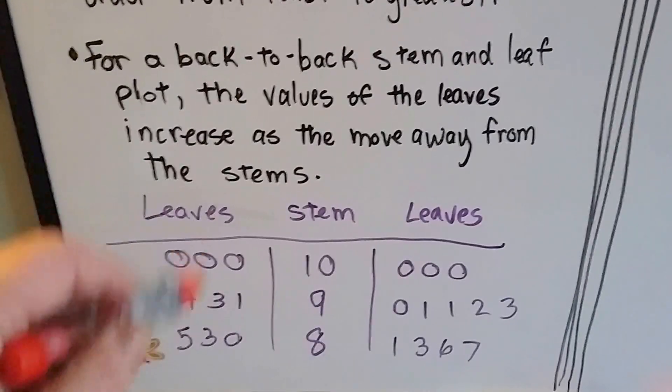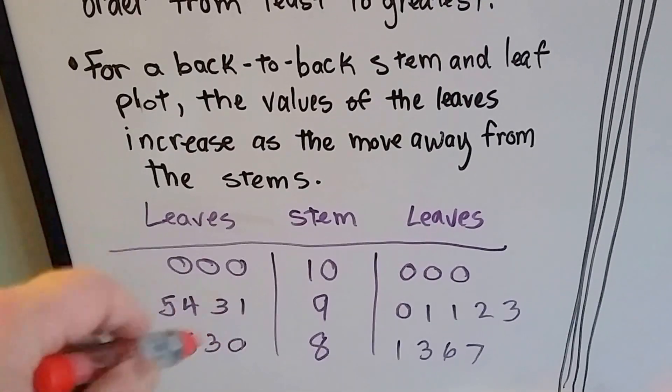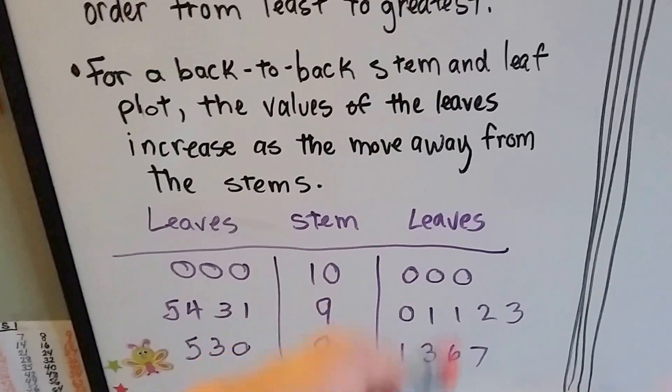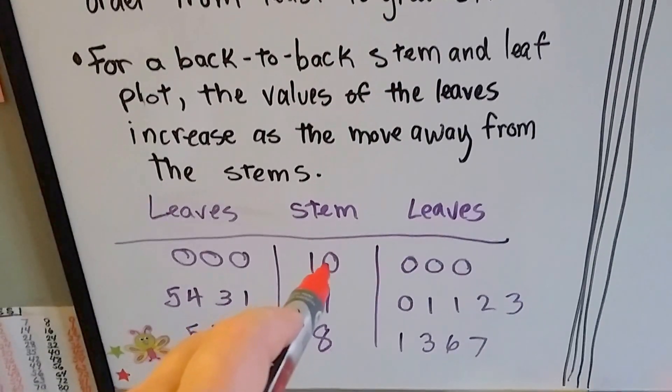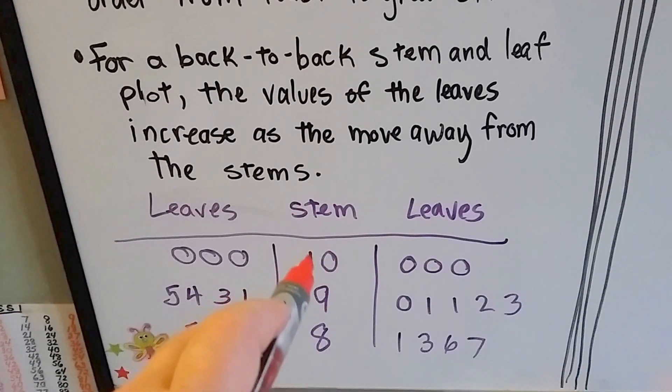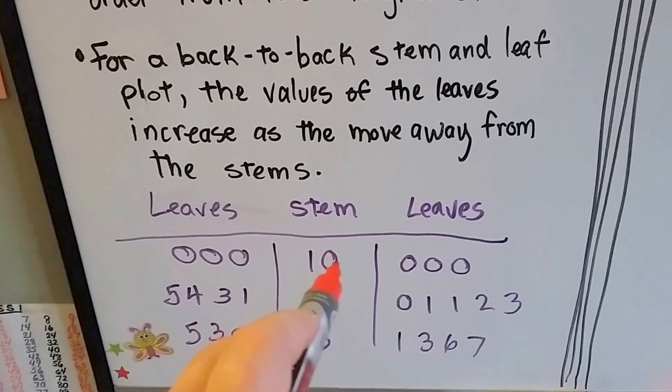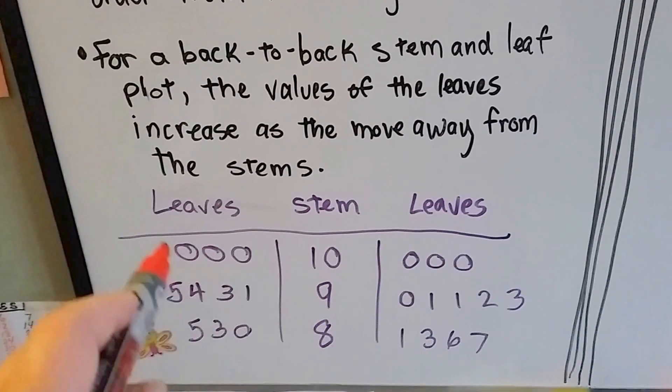So there would be one group and here's the other group, and they're sharing the stem. So if the scores were 100, you would put the hundreds in the tens place here for the stem, and then the zeros for the hundreds that they got on their test.